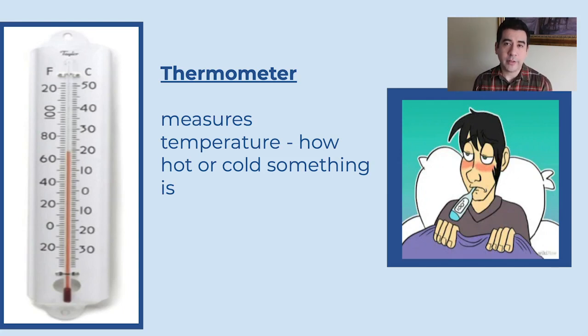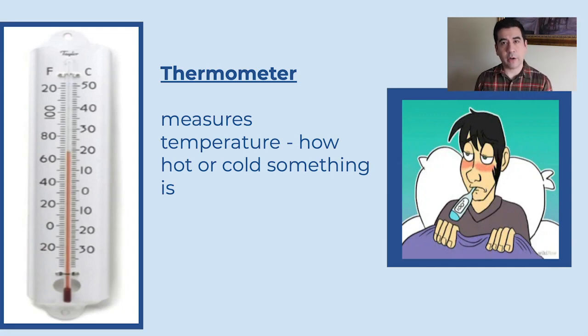Another kind of weather tool is one that I'm sure you are familiar with: the thermometer. A thermometer measures temperature — it tells how hot or cold something is. Some thermometers look like this, with what's called mercury inside of it. But if you've ever been sick, you've probably had to get a thermometer and put it under your tongue to tell your body temperature.